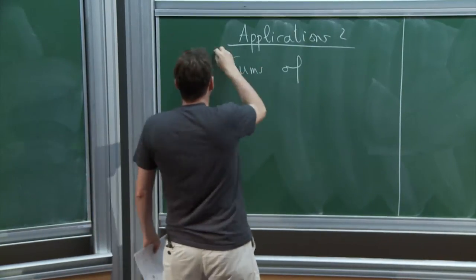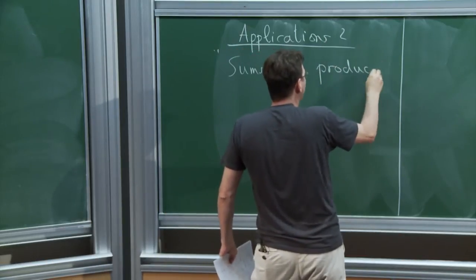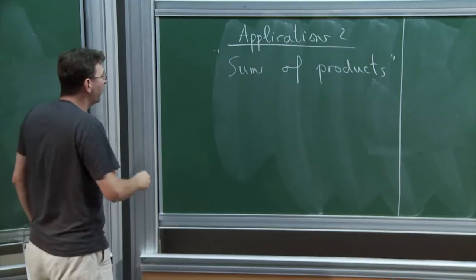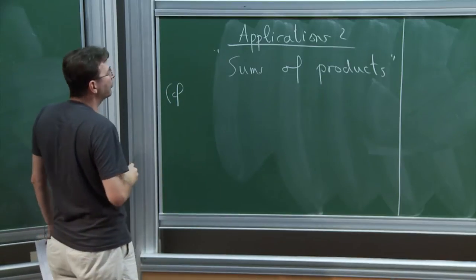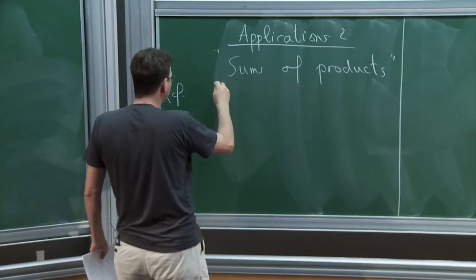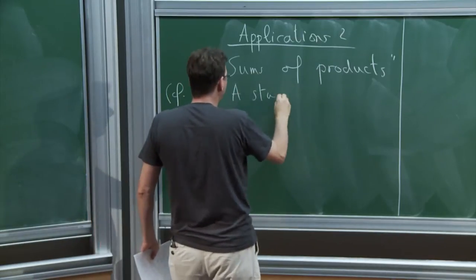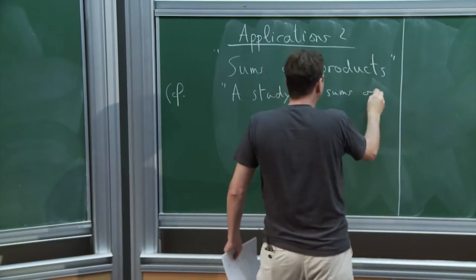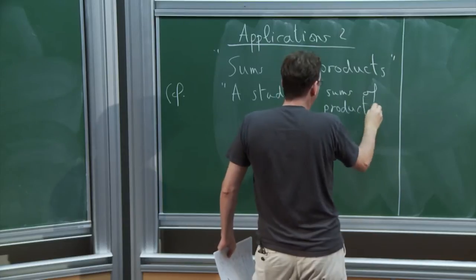These are sums of products — not some products, but sums of products. This is not contained in the survey we wrote for PISA. You can find it in a kind of semi-survey paper called 'A Study in Sums of Products,' which is on my webpage and I think it's on arXiv.